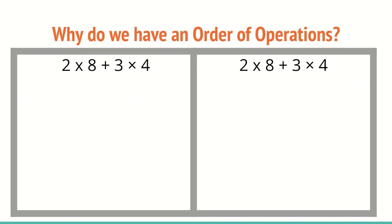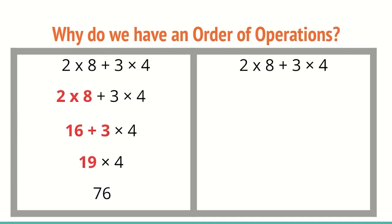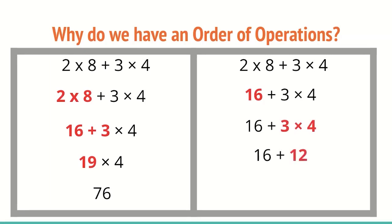So why do we have the order of operations? On the left side and the right side, it's the same equation. Starting on the left, going left to right: 2 times 8 is 16, plus 3 is 19, times 4 gives us 76. But following the order of operations on the right: 2 times 8 is 16, then 3 times 4 is 12, and 16 plus 12 is 28. These are two very different answers.